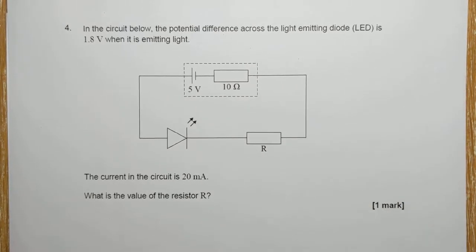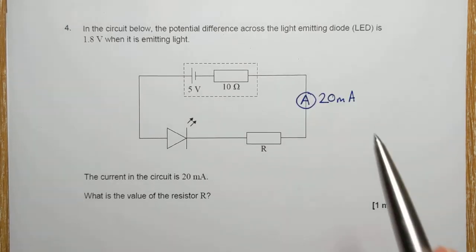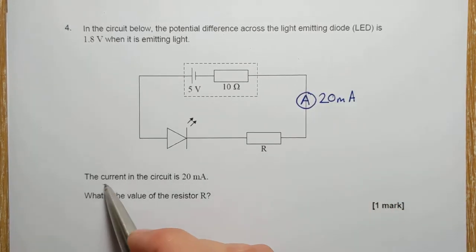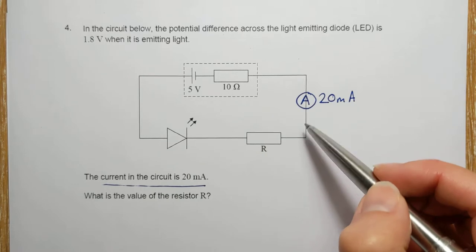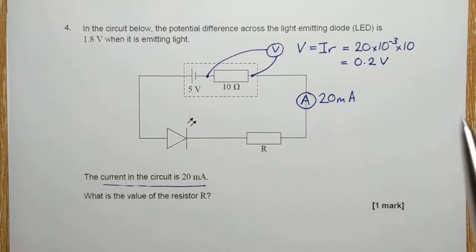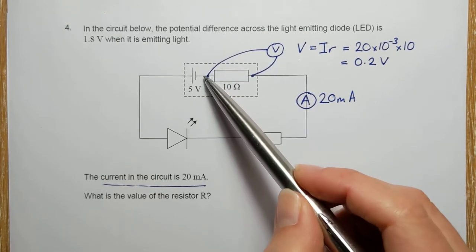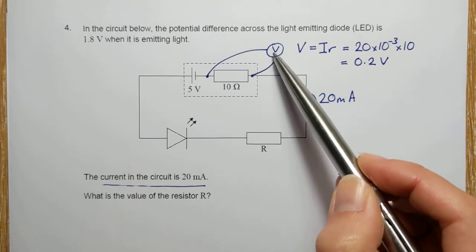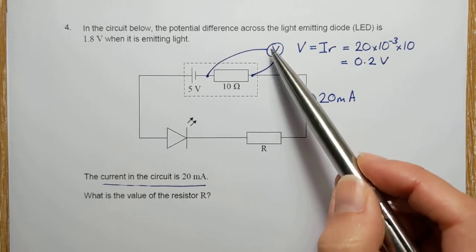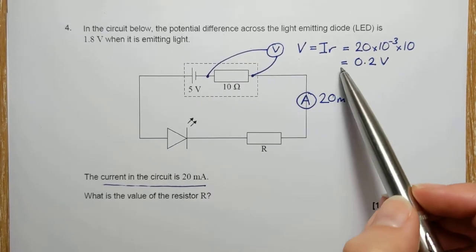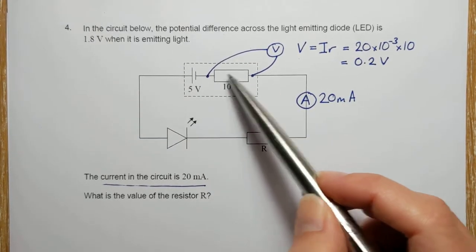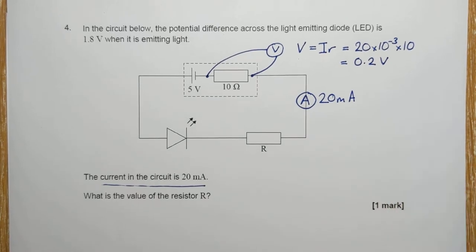So we're told that the current in the circuit is 20 milliamps, so I can work out the lost PD. So remember, I can't measure the PD across the inside of the cell, but I can work out what it is. So it's the current times the internal resistance, 0.2 volts.